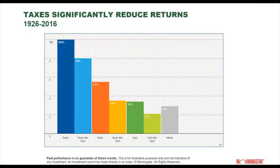To get started, I'd like to set proper context as to why minimizing taxes is important. Let's take a look at some historical data. You're looking at 90 years of historical returns — both post-tax and pre-tax returns of asset classes are side by side. You can clearly see that stock returns have been reduced by roughly 2% over the last 90 years. For bonds, the impact is just as significant — your return drops from 5.5% to 3.5%.